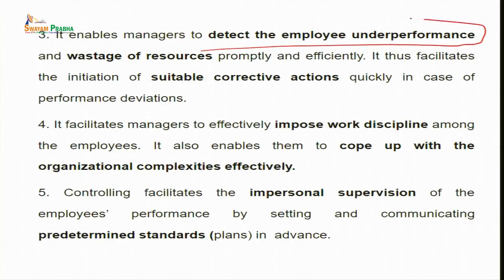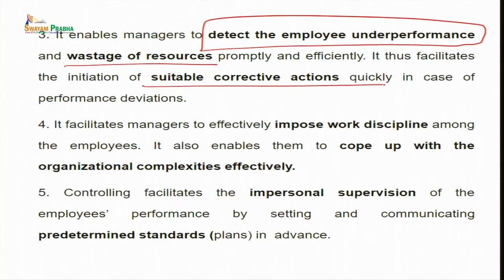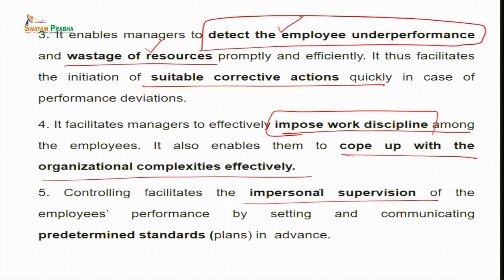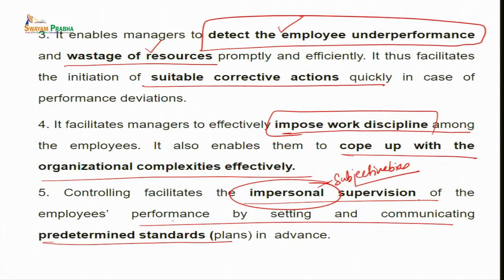Control further enables the manager to detect employee under-performance, which is much needed because if employees are underperforming the productivity will definitely be hampered. The wastage of resources is also catered to by the control process, and suitable corrective actions to improve employee performance and reduce resource wastage are identified through control. Controlling further focuses on managing the imposed work discipline effectively. It also enables coping with organizational complexities. Controlling facilitates the impersonal supervision of employee performance — the term impersonal is very important so that there is no subjective bias, no nepotism or favoritism.